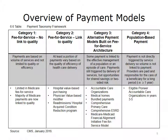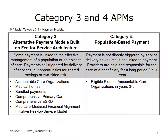Category 3 models include alternative payment models built on fee-for-service architecture, and Category 4 includes population-based payment models. As shown in the table, Category 3 models are still based on a fee-for-service structure. However, they begin to add links to the effective management of a population or to an episode of care. Category 3 includes accountable care organizations or ACOs, medical homes, bundled payments, comprehensive primary care, comprehensive ESRD, and Medicare-Medicaid financial alignment initiative fee-for-service model.